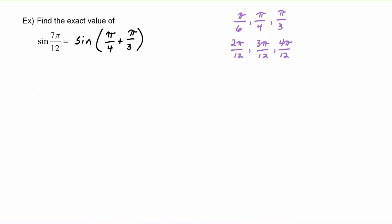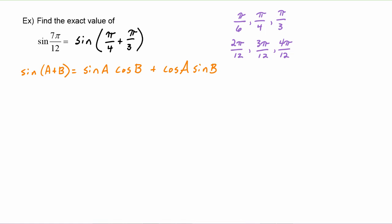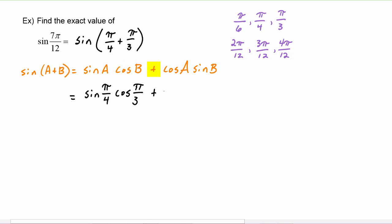We write down our sum identity: sine of (a + b) equals sine a cosine b plus cosine a sine b. So sine of 7π/12 becomes sine of π/4 times cosine of π/3, plus cosine of π/4 times sine of π/3.